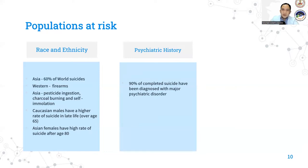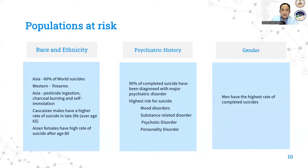90% of completed suicide have been diagnosed with major psychiatric disorders. These could be mood disorders, substance-related disorders, psychotic disorders, and personality disorders. Among the genders, men have the highest rate of completed suicides because they tend to be more aggressive and daring in their means of suicide. This can be through hanging, firearms, or jumping from a tall height. Women, on the other hand, have the highest lifetime rate of suicide attempts. This could be through self-poisoning, overdose with medications, or slashing their wrists.